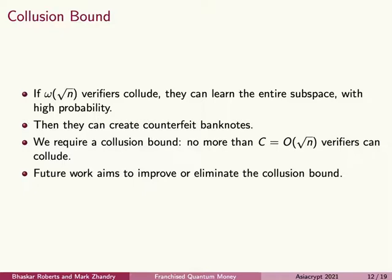There's a drawback to this construction that I want to address. If multiple adversaries collude, they can pool their verification keys. And if there are more than square root n of them, they can learn all of A with good probability, and then counterfeit successfully. So we'll assume that the number of colluding adversaries is upper bounded by some function that's O of square root n.